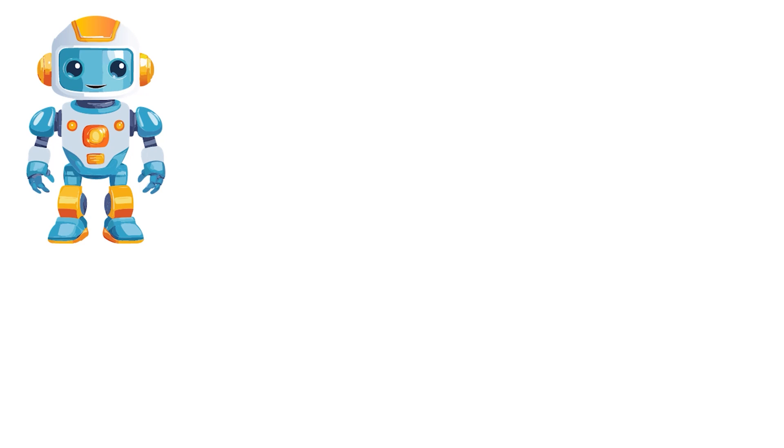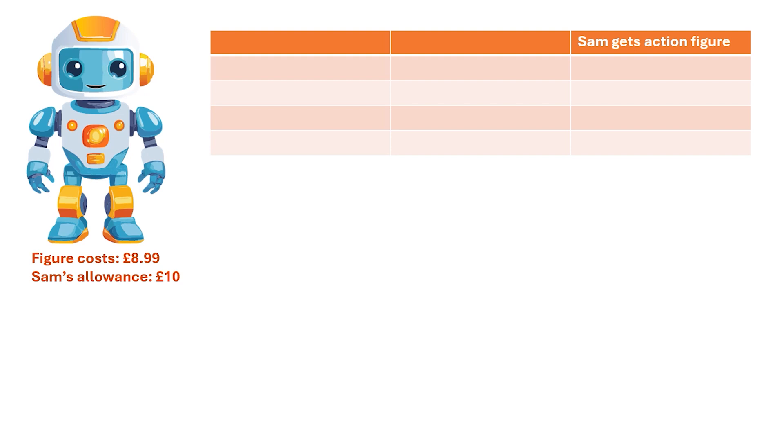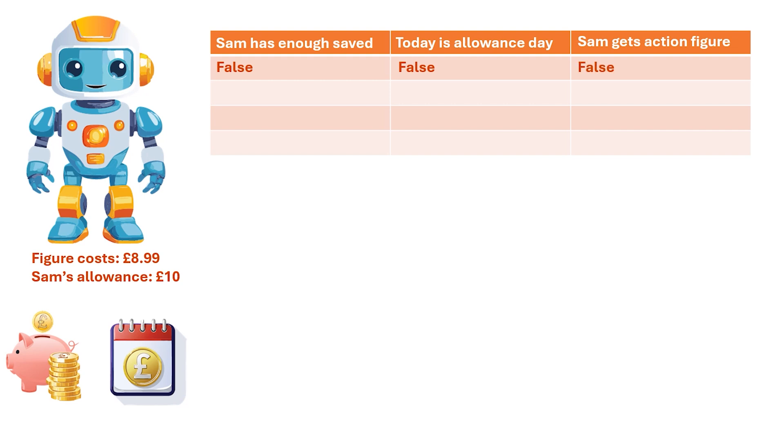Let's assume that the store does have the action figure in stock and just focus on the money situation. So the action figure costs eight pounds 99 and Sam's weekly allowance is 10 pounds. This time to determine if Sam gets the action figure, the two factors are whether Sam has enough money saved and whether today is the day on which Sam's allowance is paid. If neither of those things is true, then clearly Sam won't be getting the action figure today. Even if Sam has not saved enough money, if today is allowance day, then Sam can still buy the action figure today. If Sam has saved enough money, then even if today is not allowance day, Sam can still get the action figure. And finally, if both of those things are true—Sam has saved enough money and today is also allowance day—then great, Sam can get the action figure and have money to spare. So this relationship between inputs and outputs is represented by the OR operator, and once again this can be shown in a generalized truth table.